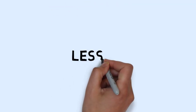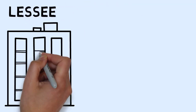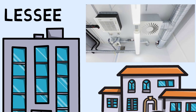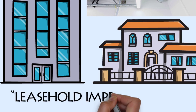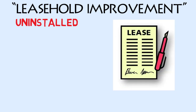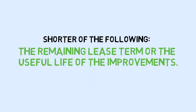Leasehold Improvements: Leasehold improvements are additions a lessee makes to a building or property that the lessee cannot remove when the lease period is over. For example, if a lessee purchases an air conditioning system in a leased building, it is considered a leasehold improvement and cannot be uninstalled and taken away once the lease expires. The cost of leasehold improvements should be amortized over the shorter of the remaining lease term or the useful life of the improvements.